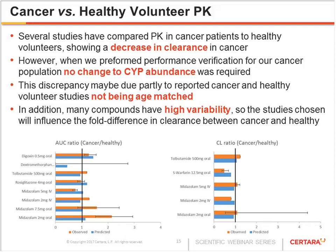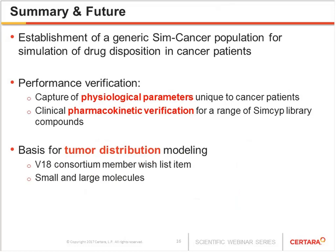In summary, we've established a generic SimCancer population for simulating drug disposition in cancer patients. We've looked at performance verification of both physiological parameters and pharmacokinetic verification. Looking to the future, there is a version 18 wish list item looking at tumor distribution and the population of both small and large molecules, and this population will form the basis for that work.